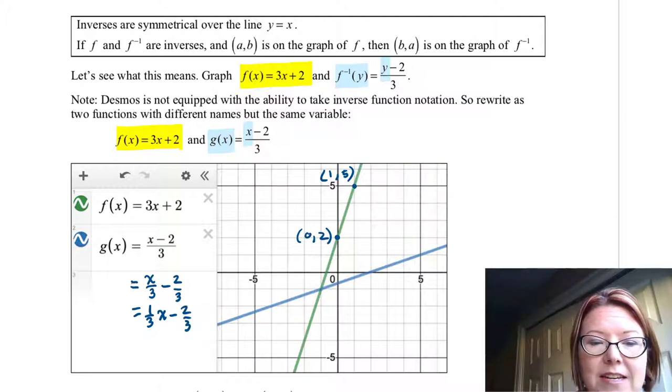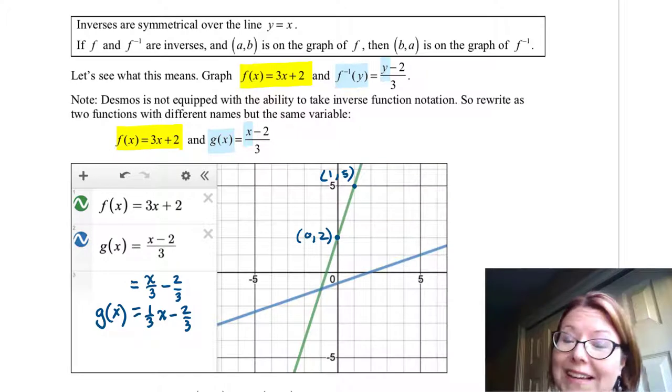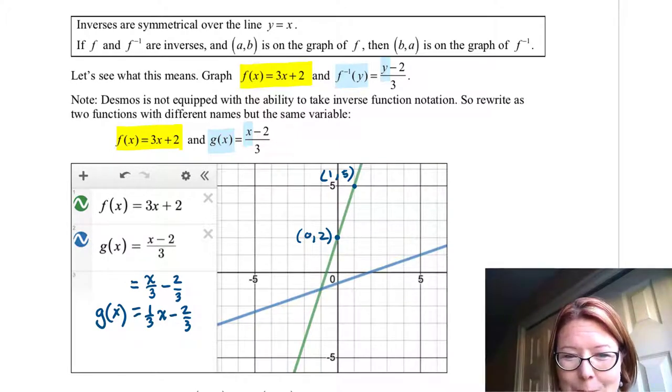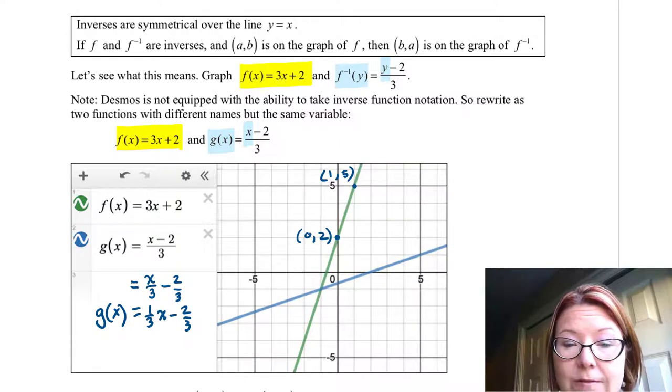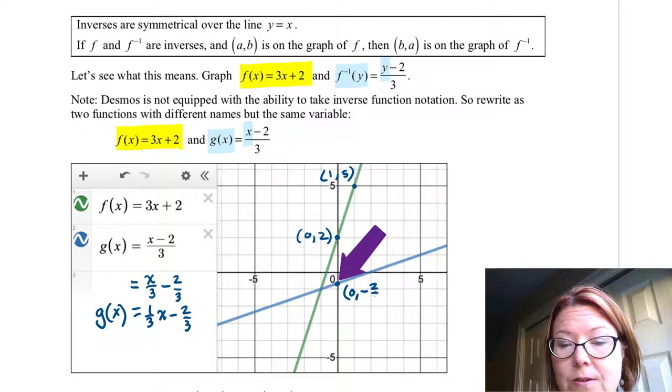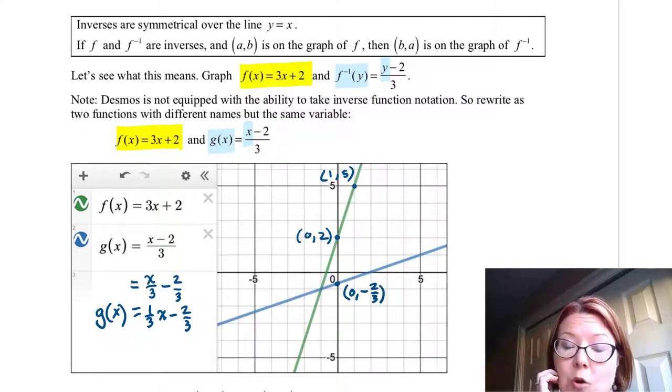This way we see it a little bit closer to its y = mx + b form. This tells me that the y-intercept of g is (0, -2/3) and it has a slope of 1/3.